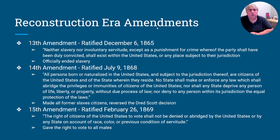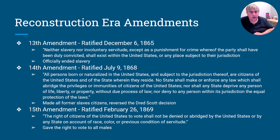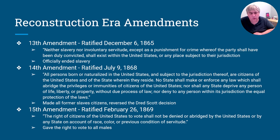Last but not least, three Reconstruction Era amendments you have to know. The 13th Amendment ends slavery, ratified December 6th, 1865. The 14th Amendment allows for black citizenship and undoes the Dred Scott decision, ratified July 9th, 1868. The 15th Amendment, from February 26th, 1869, gives all males the right to vote regardless of skin color or previous servitude — if you are a male and an American citizen, you can vote. Women would not get to vote until 1920, and Native Americans not until later in the 1920s.